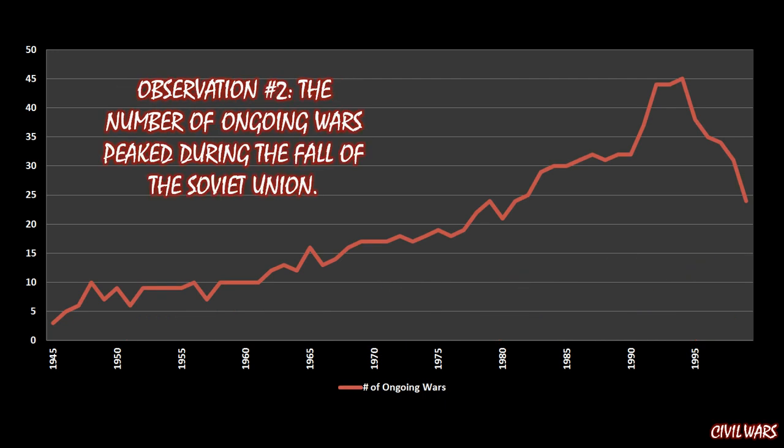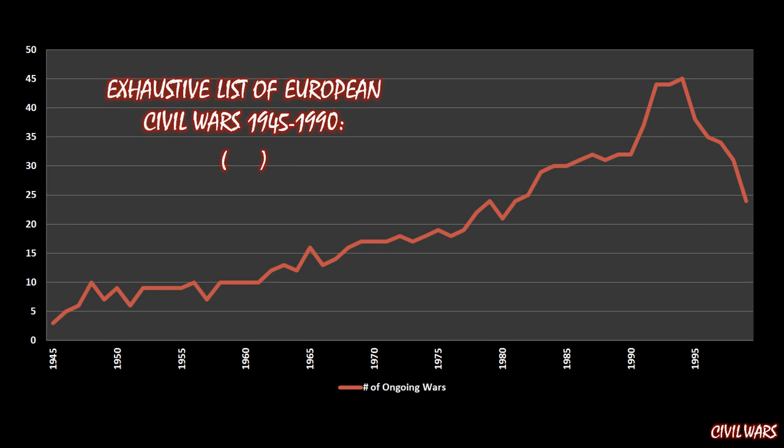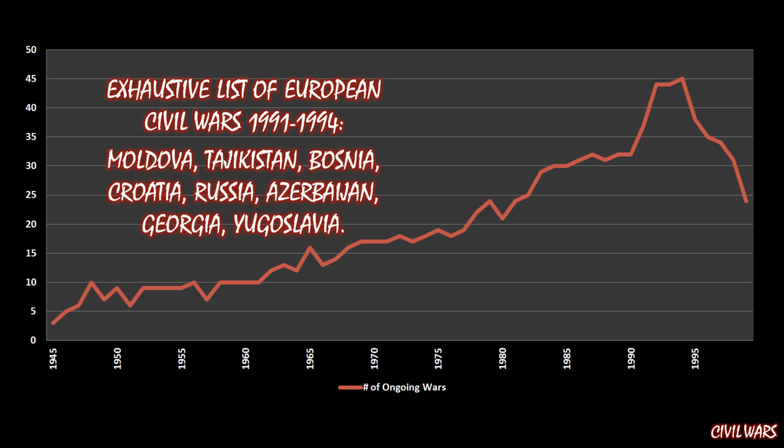The second observation is that the number of ongoing wars spikes during the fall of the Soviet Union. If you look at 1990, we go from about 32 ongoing wars and suddenly jump up to 44 or 45. As the Soviet Union crumbles, the number of civil wars increases. Here's an exhaustive list of European civil wars from 1945 to 1990: there weren't any. But as the Soviet Union crumbles — counting all Soviet successor states as part of Europe — the number of European civil wars from 1991 to 1994 goes to Moldova, Tajikistan, Bosnia, Croatia, Russia, Azerbaijan, Georgia, and Yugoslavia. So whereas there weren't any European civil wars during the Cold War era, suddenly there were a lot.